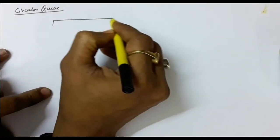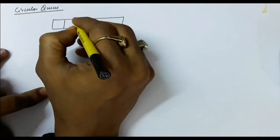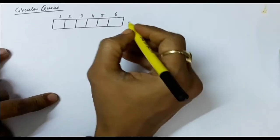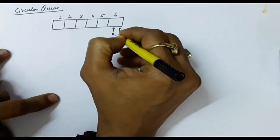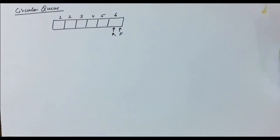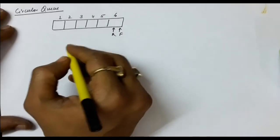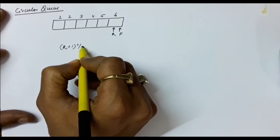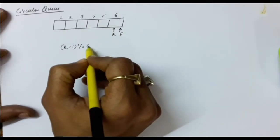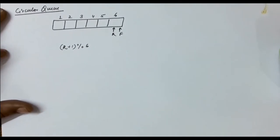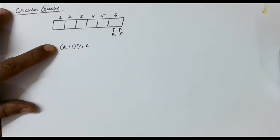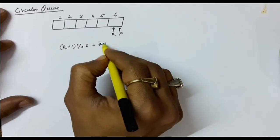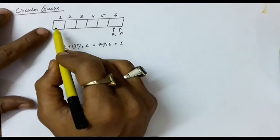Suppose there is a buffer and in this buffer, let us say we mark the positions 1, 2, 3, 4, 5, 6. Let us say the rear and the front both have been initialized to the last position. Now suppose you have to insert an element. For insertion of an element, you simply follow rear plus 1 mod size. So the size of this is 6. For insertion you are following this rule: rear plus 1 mod 6. So the value rear plus 1 mod 6 will be 7 mod 6, and 7 mod 6 will give you 1, so you can insert an item here.